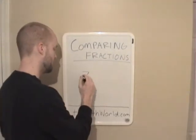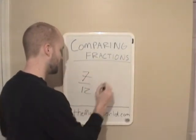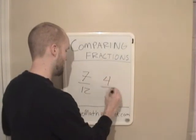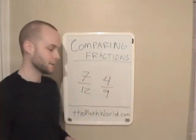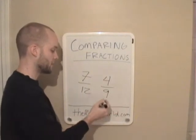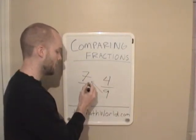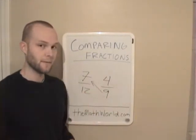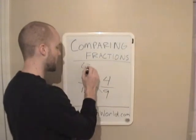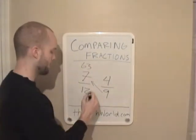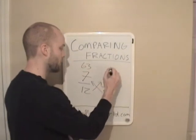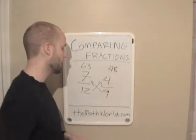Let's say seven-twelfths over four-ninths. And remember, the first thing we're going to do again is multiply up. So nine times seven is 63. We're going to write 63 over here, and 12 times four is 48. So I'm going to write 48 here.